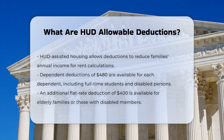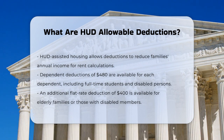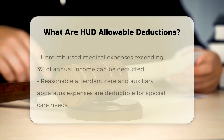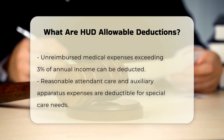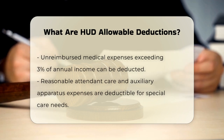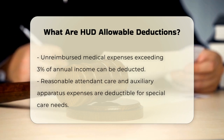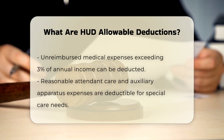For elderly families or families with disabled members, there's an additional deduction of $400. This is a flat rate that applies regardless of the number of elderly or disabled family members in the household.